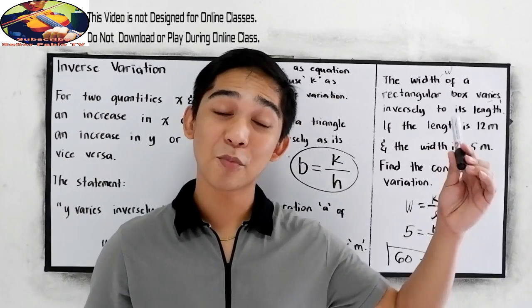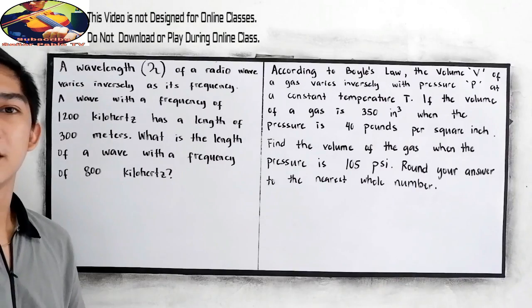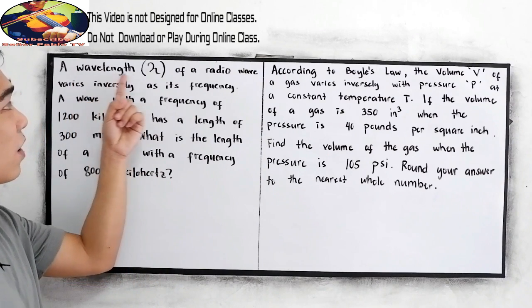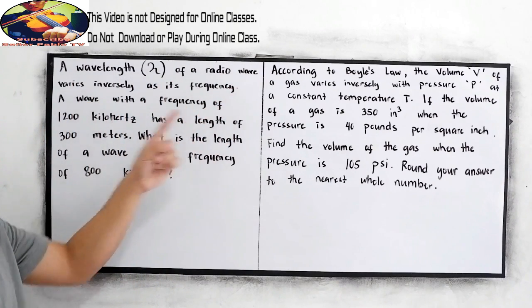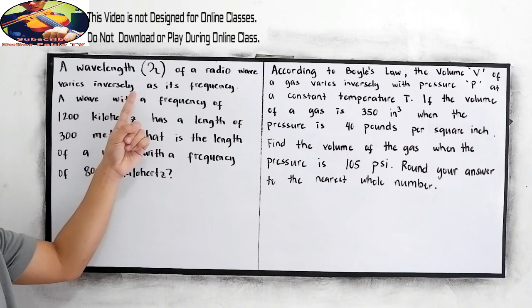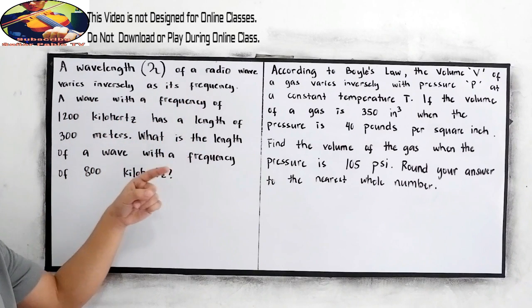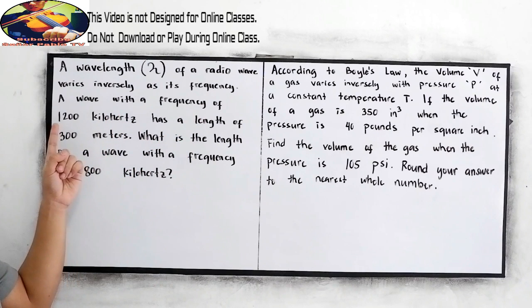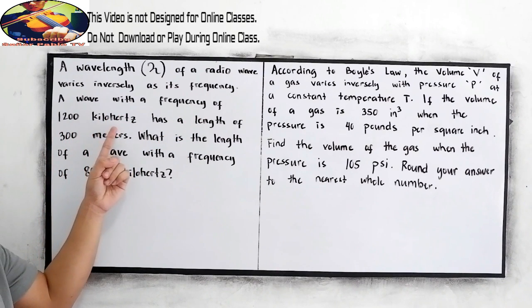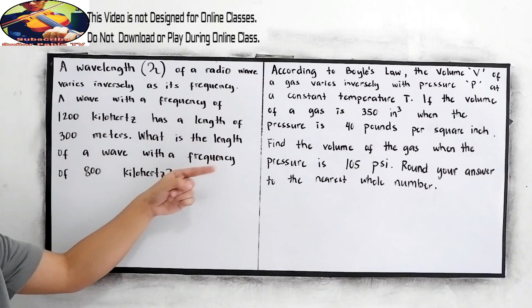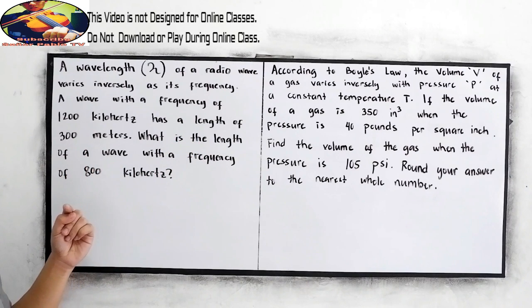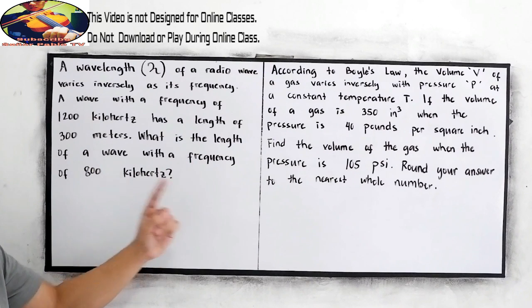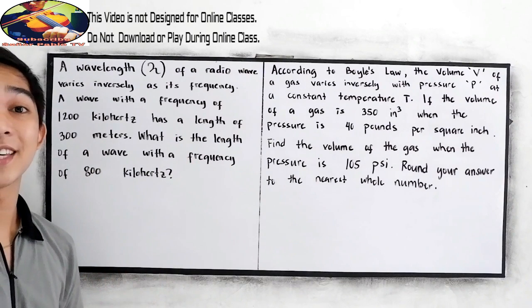Now, let's have more examples. A wavelength of a radio wave varies inversely as its frequency. A wave with a frequency of 1,200 kHz has a length of 300 meters. What is the length of the wave with a frequency of 800 kHz?